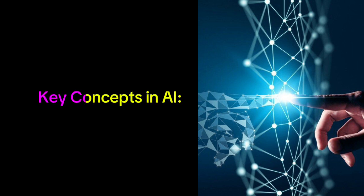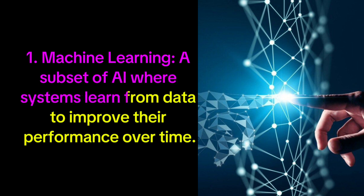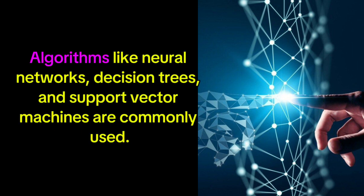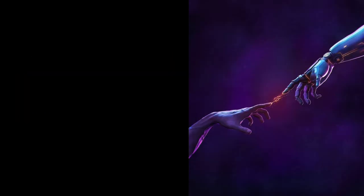Key concepts in AI. 1. Machine learning: a subset of AI where systems learn from data to improve their performance over time. Algorithms like neural networks, decision trees, and support vector machines are commonly used.